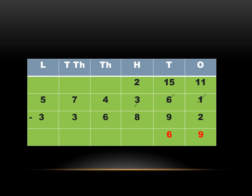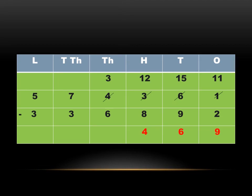At the hundreds place, two is smaller than eight, so it is not possible to subtract eight from two. So one will be borrowed from the thousands place. At the hundreds place it will become twelve, and at the thousands place we will have three. Twelve minus eight gives four, so write four.